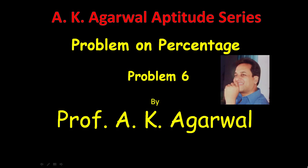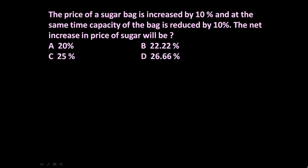Hello friends and welcome to AK Agrawal Aptitude series. In this session we are going to learn a technique for solving a problem on percentage. The given problem is: the price of a sugar bag is increased by 10 percent and at the same time capacity of the bag is reduced by 10 percent. The net increase in price of sugar will be — 20 percent, 22.22 percent, 25 percent, or 26.66 percent?